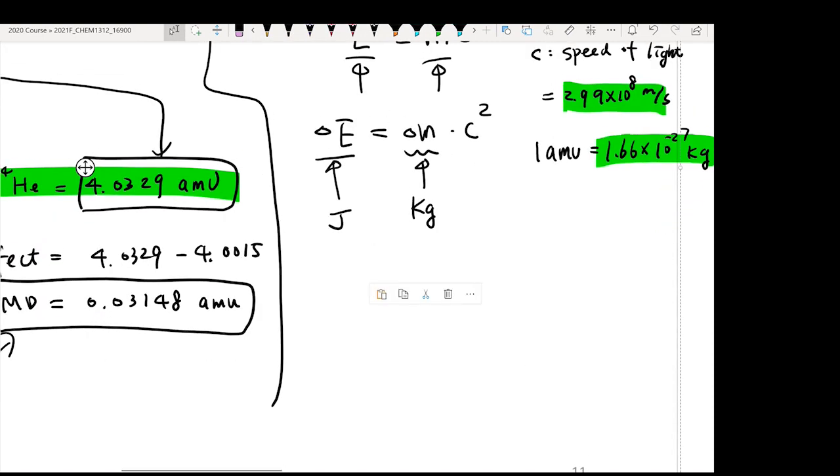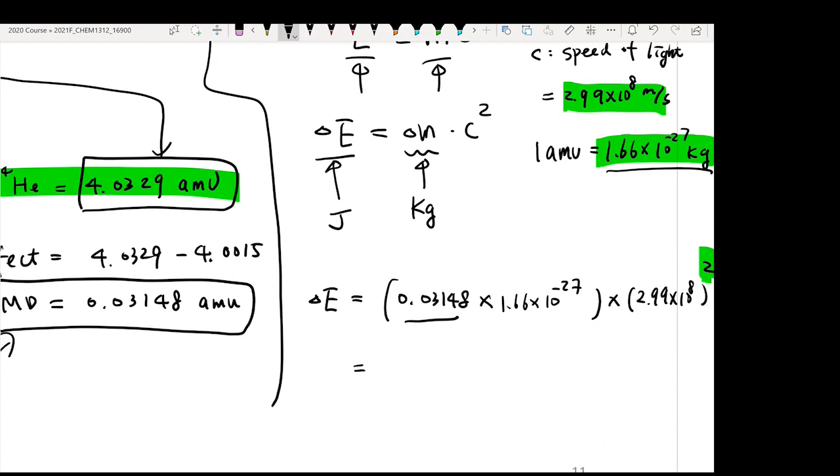With all these things in mind, you know your delta E. For this case, it's going to equal to your delta m, 0.03148 amu, and you want to convert into kilogram. So multiply 1.66 times 10 to the negative 27. This will give you the mass in kilogram. Then you need to multiply your speed of light, 2.99 times 10 to the 8th power. Don't forget to square it. Once you put these things all correctly, you are going to get a number of 4.39 times 10 to the negative 12 joule.